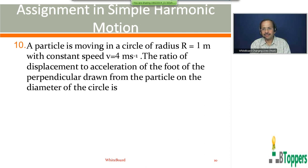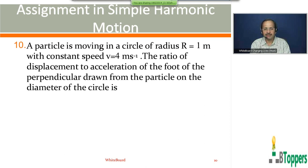Come on, look at the screen here. I am going to read question number 10 and discuss the solution. The particle is moving in a circle of radius R equal to 1 meter with a constant speed V equal to 4 meter per second. The ratio of displacement to the acceleration of the foot of the perpendicular dropped from the particle on the diameter of the circle is asked.